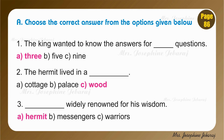Number 1. The king wanted to know the answers for how many questions. We learn in the lesson, the king had 3 questions for which he wanted to find answers. So the answer is 3.